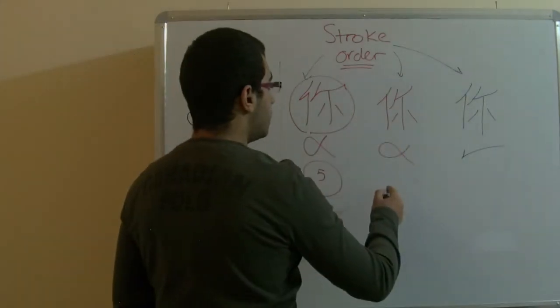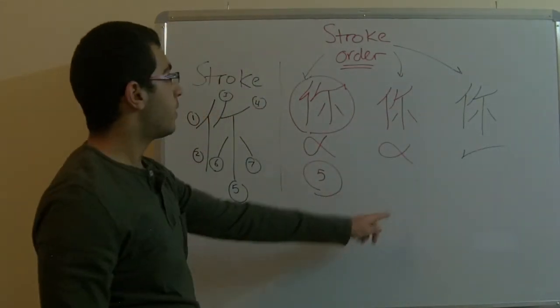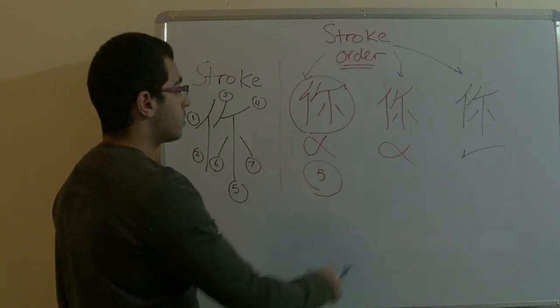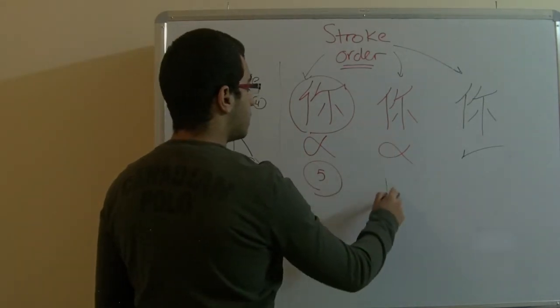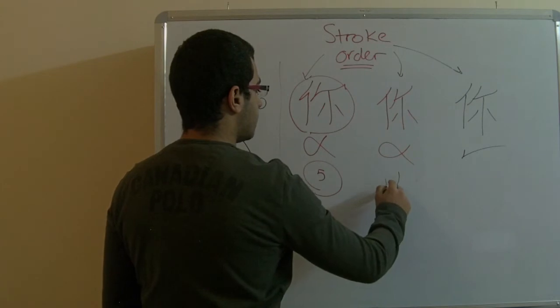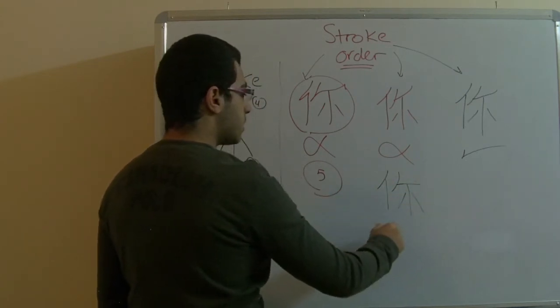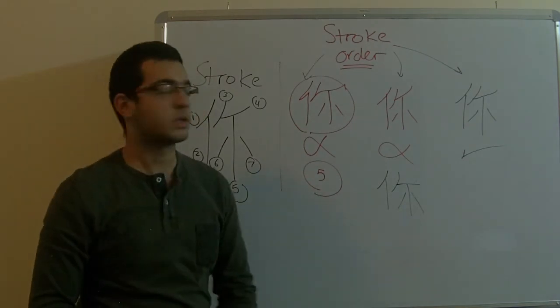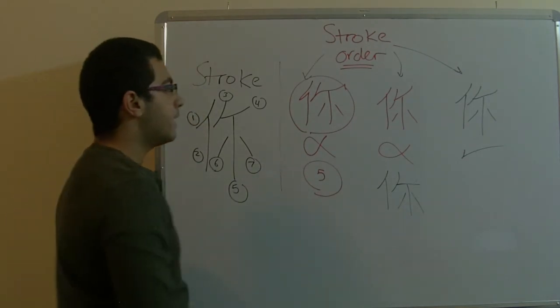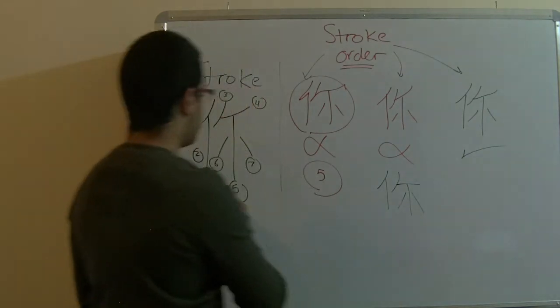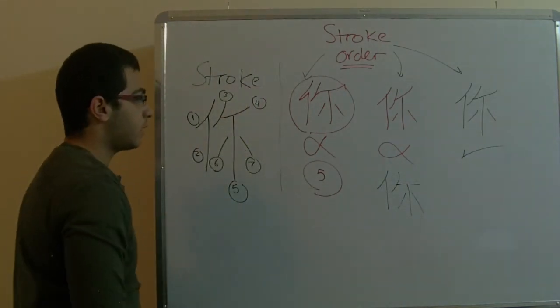In this one, I mistook the arrangement of the strokes in the word. So, I drew this first, then this, this, and this. So, this is wrong because I didn't arrange the strokes in the right way. And the last one is drew correctly.